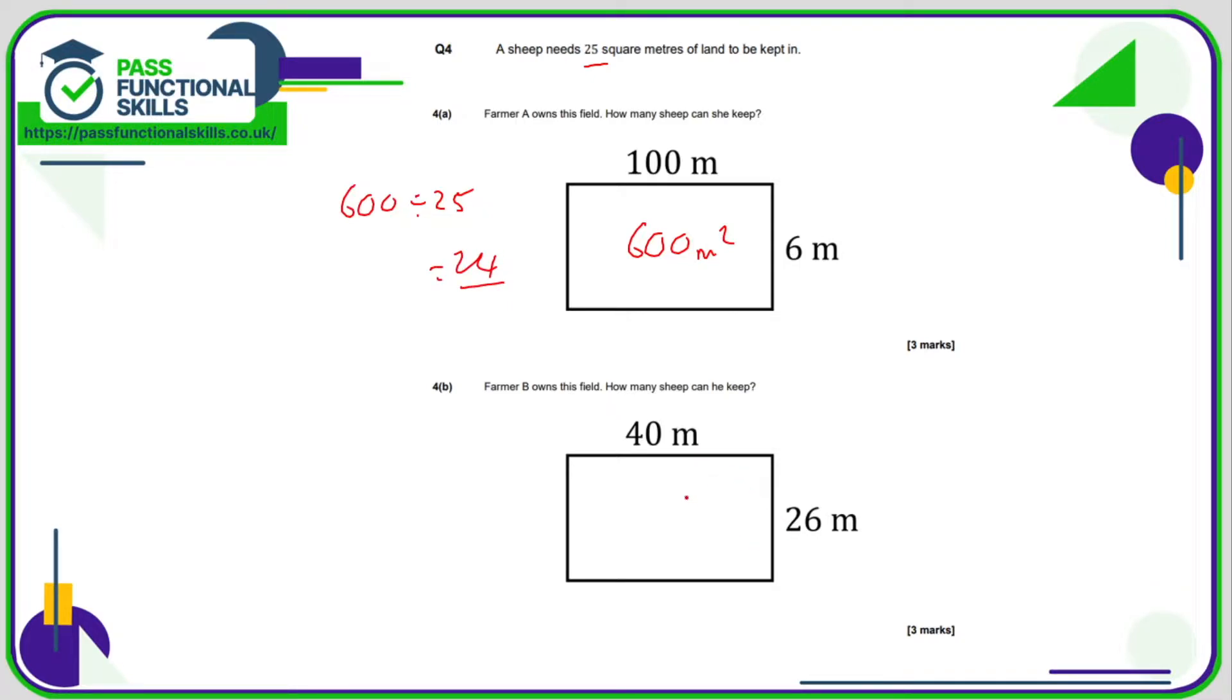This field here has an area of 40 times by 26, which is 1,040 square metres. So if we're dividing 1,040 by the 25 square metres, representing what one sheep needs, then we can work out that this farmer can fit in 41.6 sheep. But he can't have 0.6 of a sheep, so that can therefore only be 41.